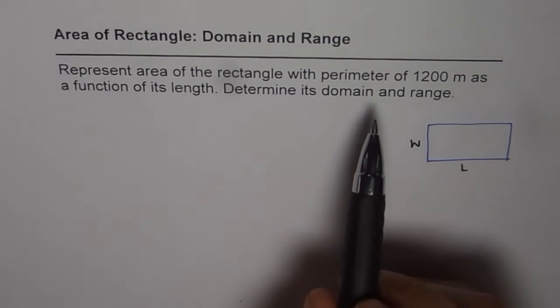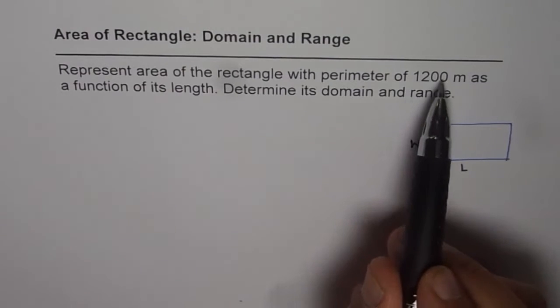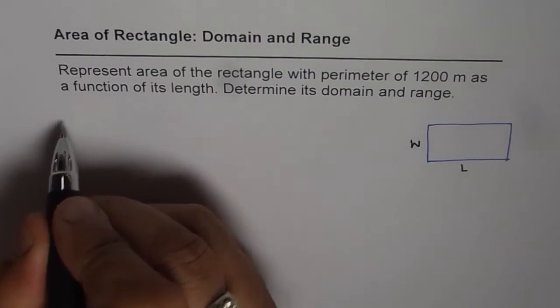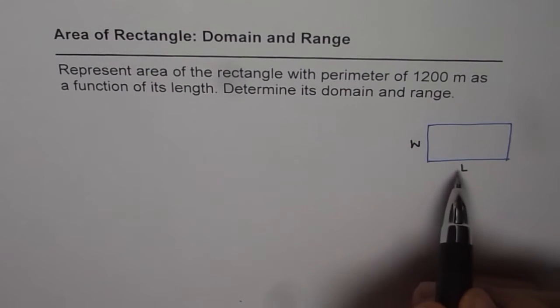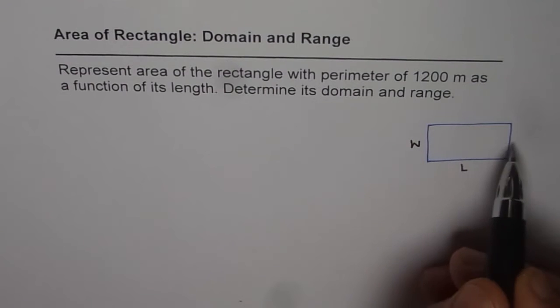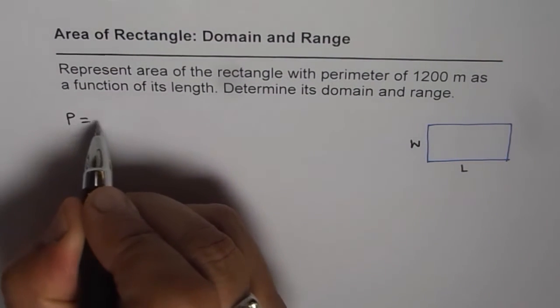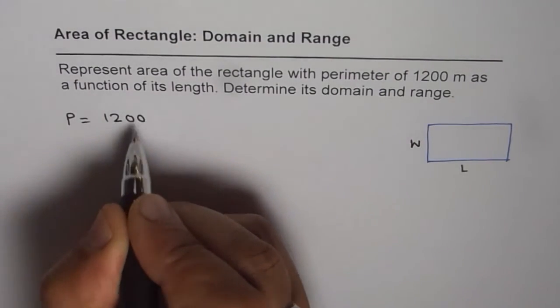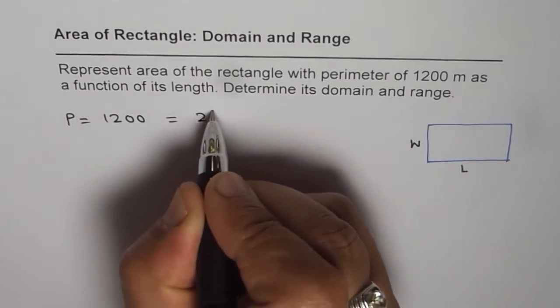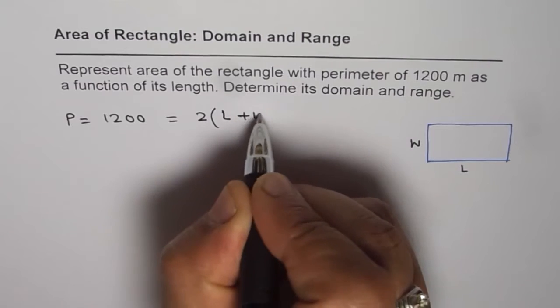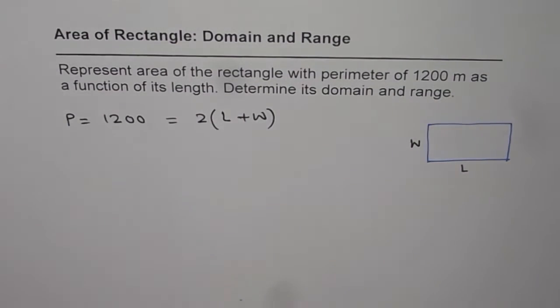Now when we say that perimeter is 1,200, it means what? It means sum of twice length and twice W should be 1,200. So since perimeter is equal to 1,200, we know that 2 times length plus width should be 1,200.